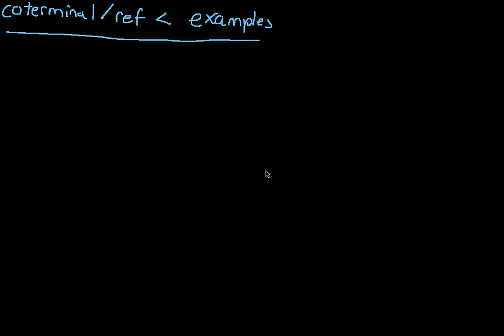This video is to provide you with some examples of coterminal and reference angle problems that you might come up with. So what I'm going to do is I'm going to go ahead and just write some angles in degrees and we're going to find a couple of different coterminal angles for them as well as what the reference angle is. I'm going to try to pick degrees that are in different quadrants so that we can really utilize all the rules discussed in the last video.